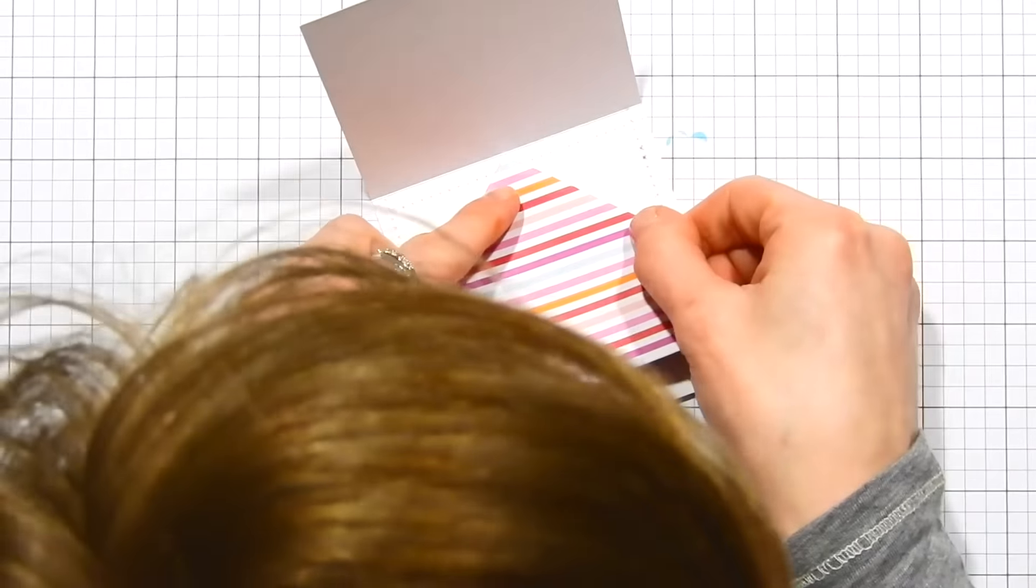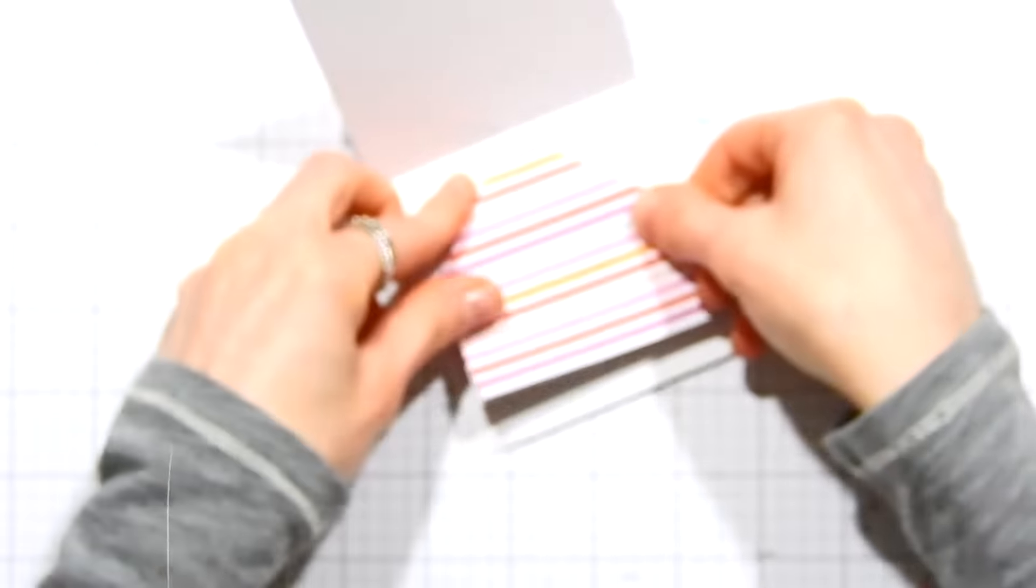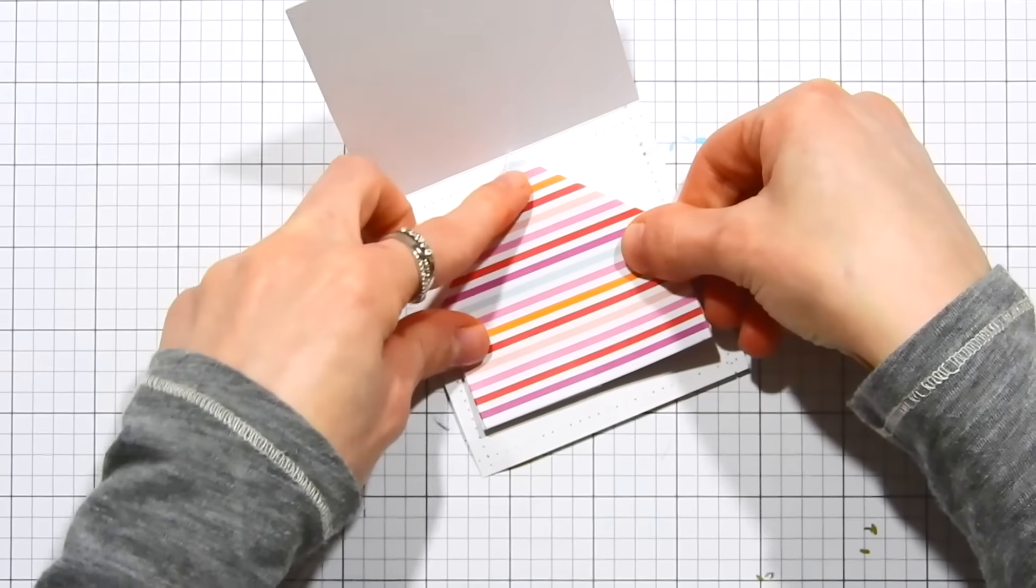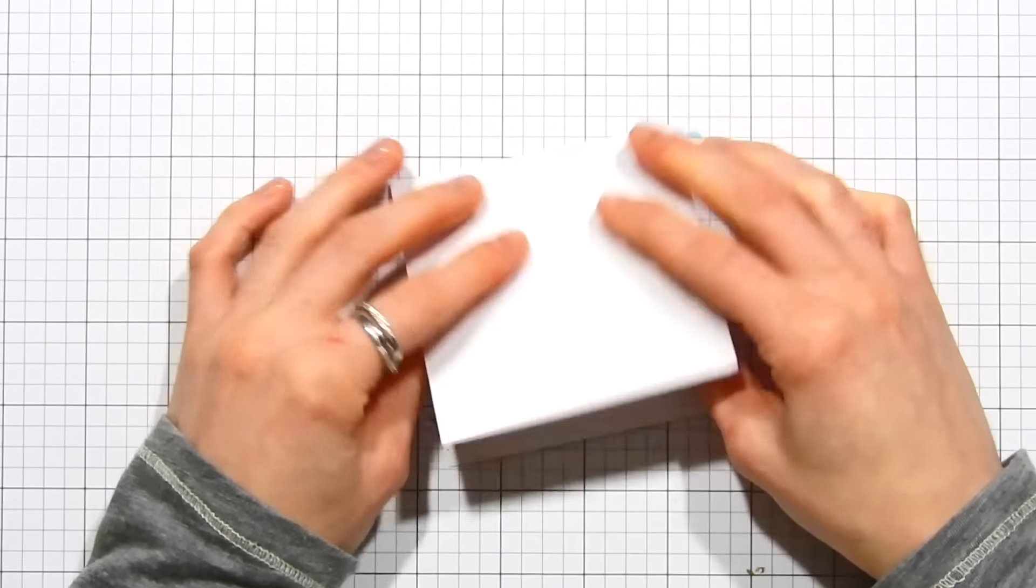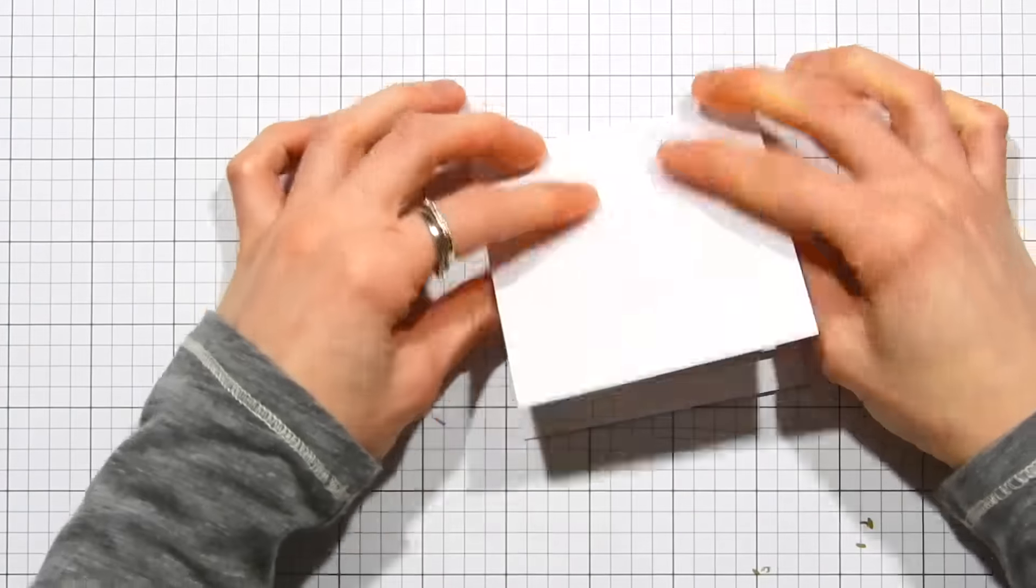Now I'm going to line up that point with the center fold of our card base. I'm going to press that down really well. Bear in mind my head's in the way here because I was trying to line this up, but you just want to make sure you get that point lined up right there along the center fold line. Now we're going to add ATG adhesive to the other side of our pop-up element.